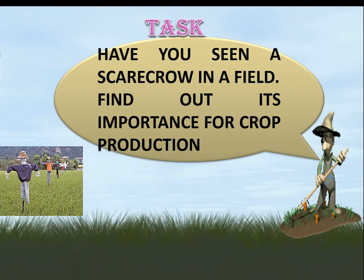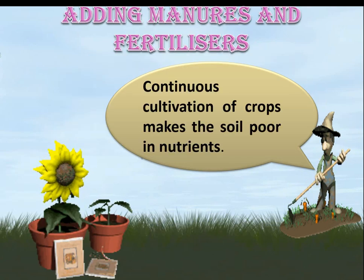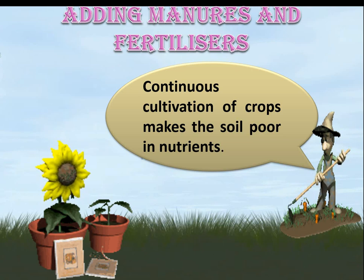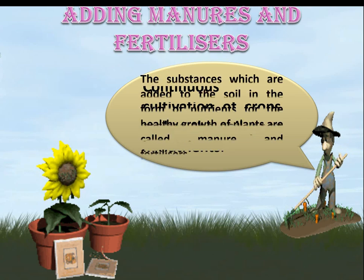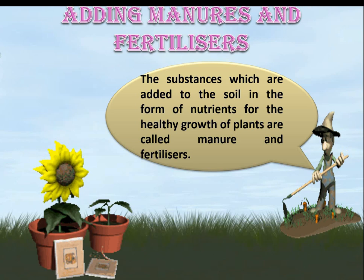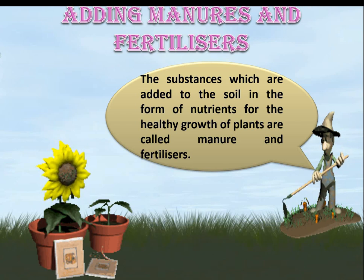Here is a task for you: have you seen a scarecrow in a field? Find out its importance for crop production. The third step: continuous cultivation of crops makes the soil poor in nutrients. The substances which are added to the soil in the form of nutrients for the healthy growth of plants are called manure and fertilizers.